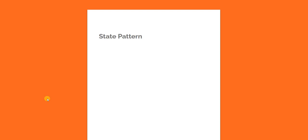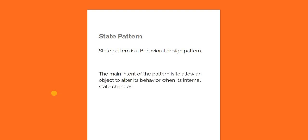State machine is nothing but an implementation of the state design pattern, which is one of the patterns part of the Gang of Four design patterns. State pattern is a behavioral design pattern. The main intent of this pattern is to allow an object to alter its behavior when its internal state is changed.